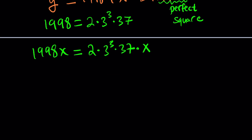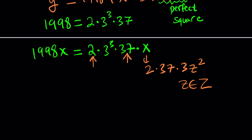This whole thing needs to be a perfect square. We already have 2, so we need another 2; we need another 37; and we need a 3. But that's not the whole thing — we could still have z squared for some integer z. When you multiply these together, x will be a perfect square.